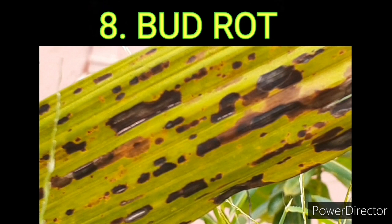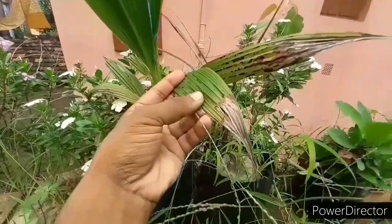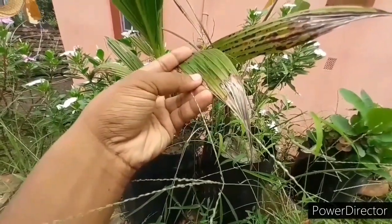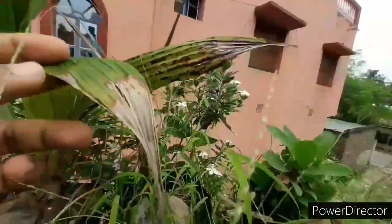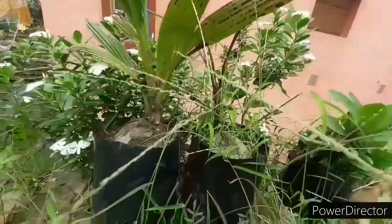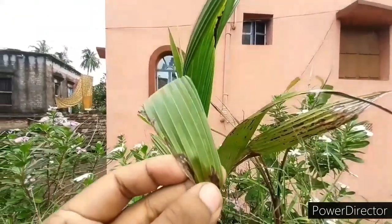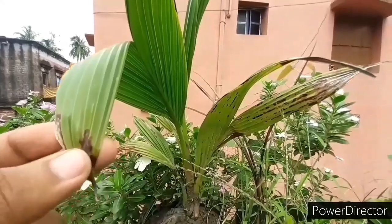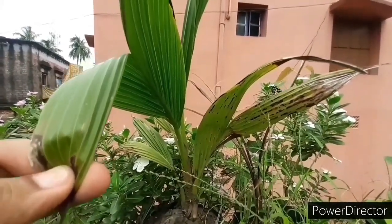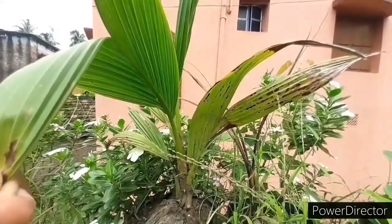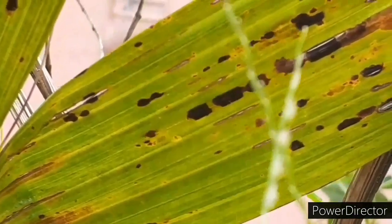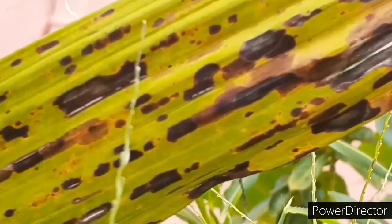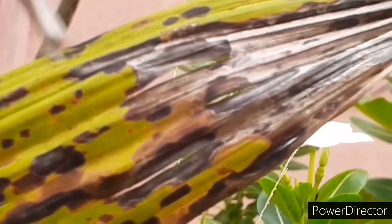The last kind of disease is bud rot. This happens in the coconut tree, and in this kind of disease there are discolored spots on the leaves of the coconut plant. To stop the spreading of this disease, remove the infected leaves and then apply or spray copper oxychloride in the ratio of 4 grams per liter of water on the leaves after the onset of the monsoon. This can also be stopped by providing adequate drainage and making proper spacing between each coconut plant.